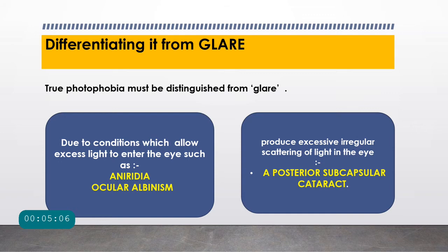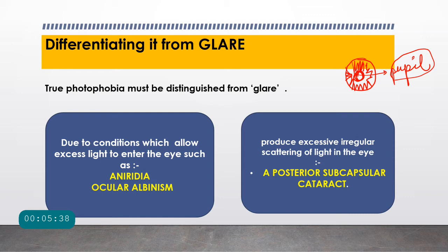It is very important to differentiate photophobia from glare. True photophobia must be distinguished from glare. Glare occurs in conditions that allow excessive light to enter the eye. The iris terminates into the pupil — the central portal into the eyeball — and the pupil size regulates the amount of light entering. A small pupil allows less light; a larger pupil allows more. The iris contains pigments that reflect excessive incoming light. In conditions like aniridia, where the iris is absent, excessive light enters the eyeball and causes glare symptoms.